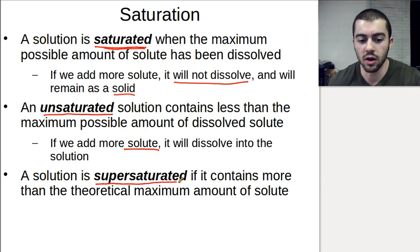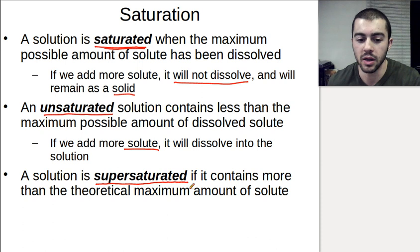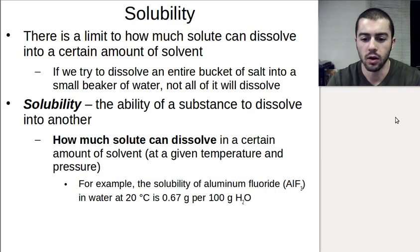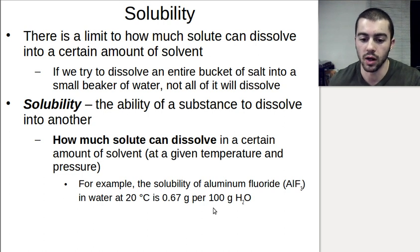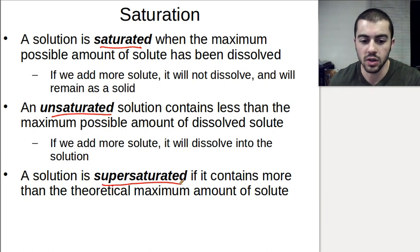There is a special case called a supersaturated solution, where under very special conditions we can dissolve more than the theoretically possible amount of solute based on the solubility of the compound. For aluminum fluoride with a solubility of 0.67 grams per 100 grams of water, if we somehow dissolve 1 gram into 100 grams of water, that would be a supersaturated solution — more than the theoretical solubility would dictate. So: saturated has the maximum amount, unsaturated has less than the maximum, and supersaturated has more than the maximum possible amount dissolved.